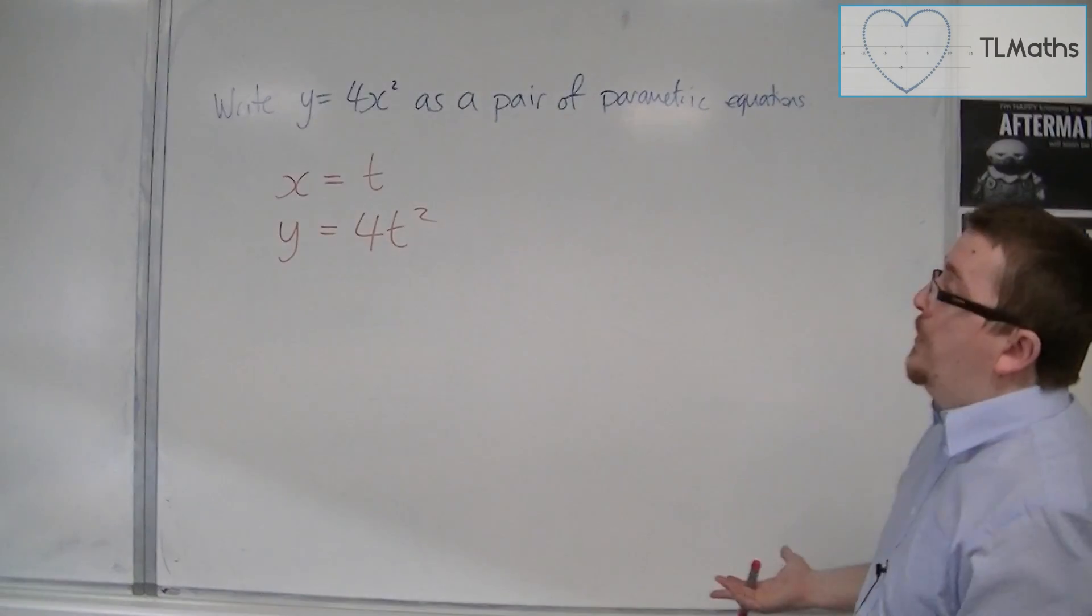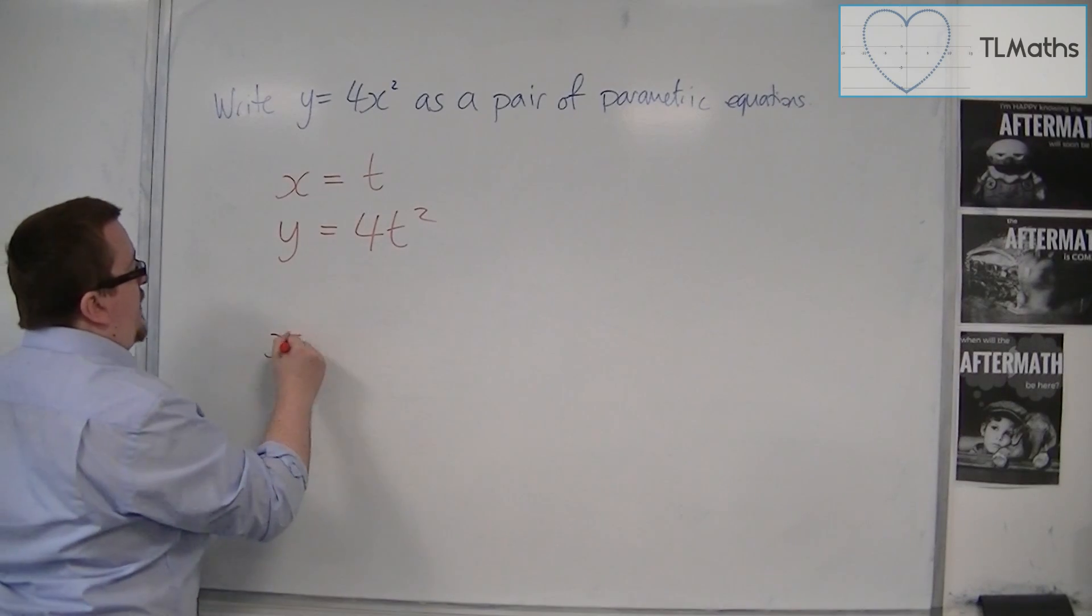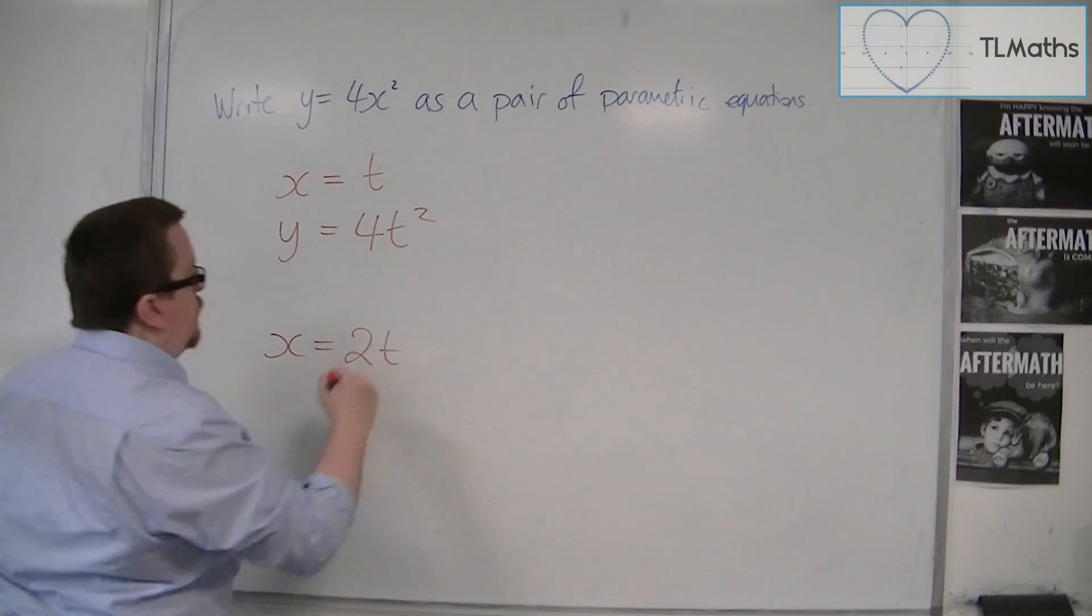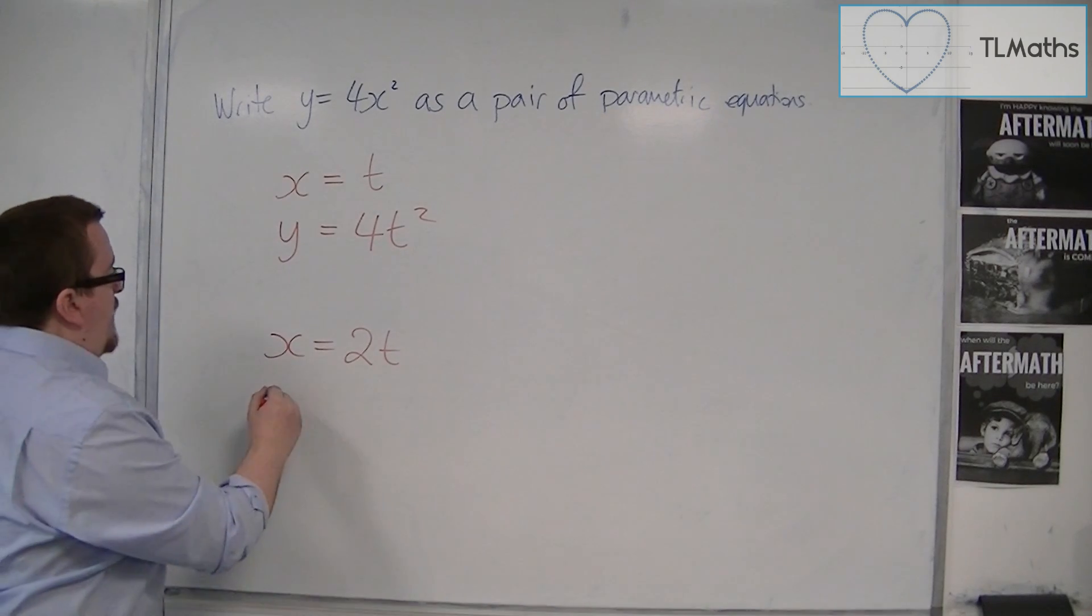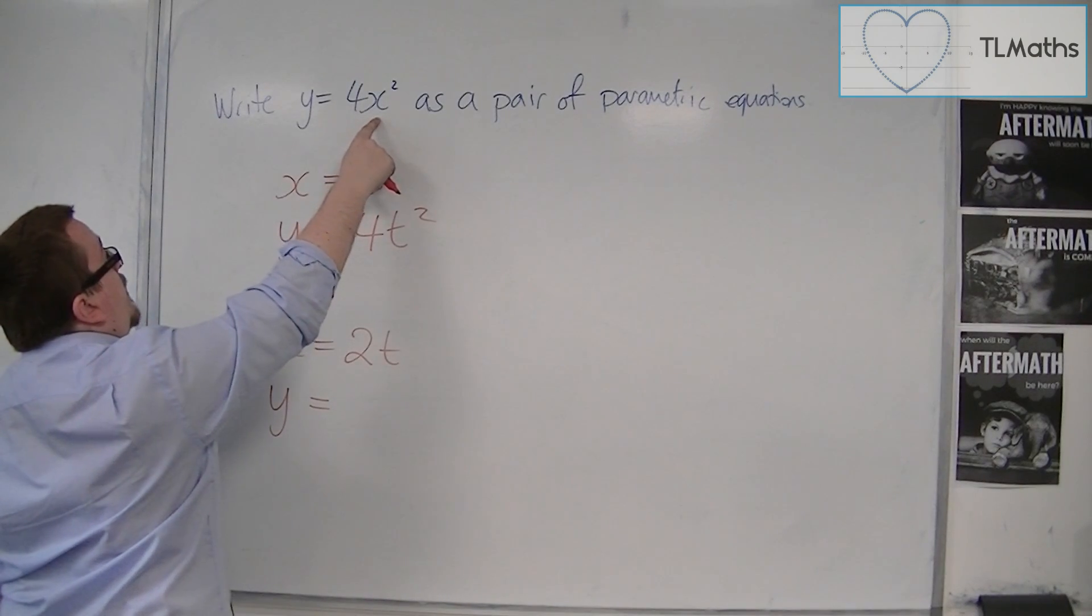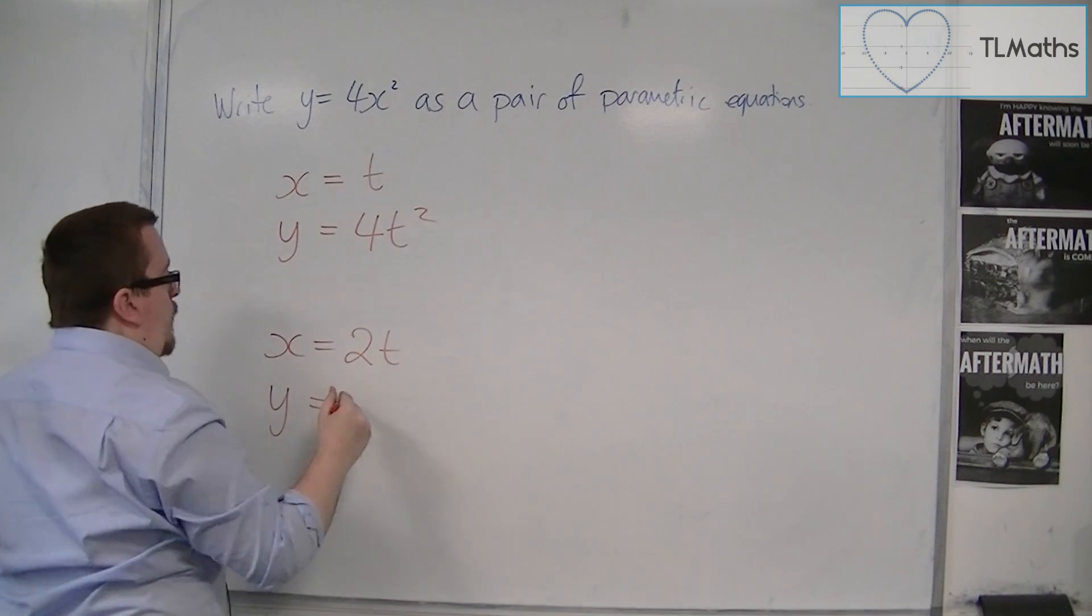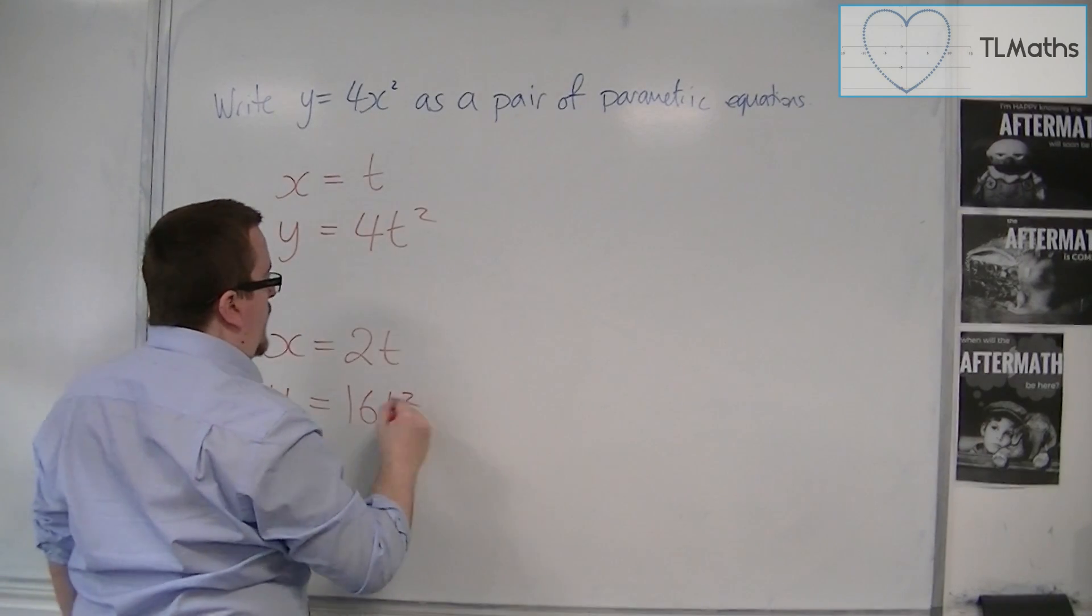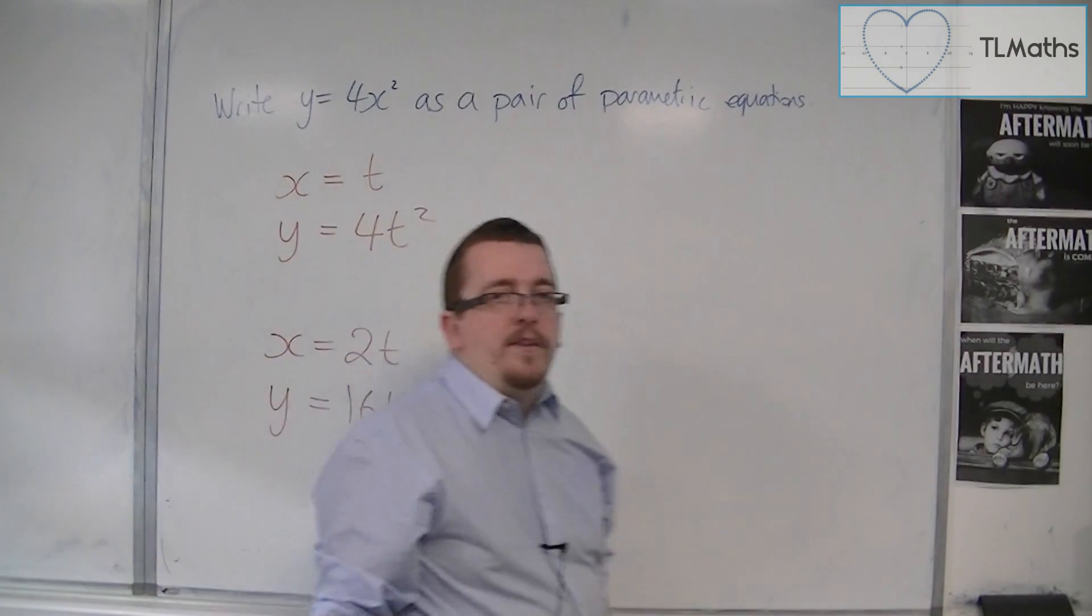But you don't have to do it that way. You could say that x equals 2t, for example. Now if x equals 2t, then y equals, well, I could replace the x with 2t, and I'm going to get 4 lots of 4t squared, so I'm going to get y equals 16t squared. So there's not just one way of writing these equations.